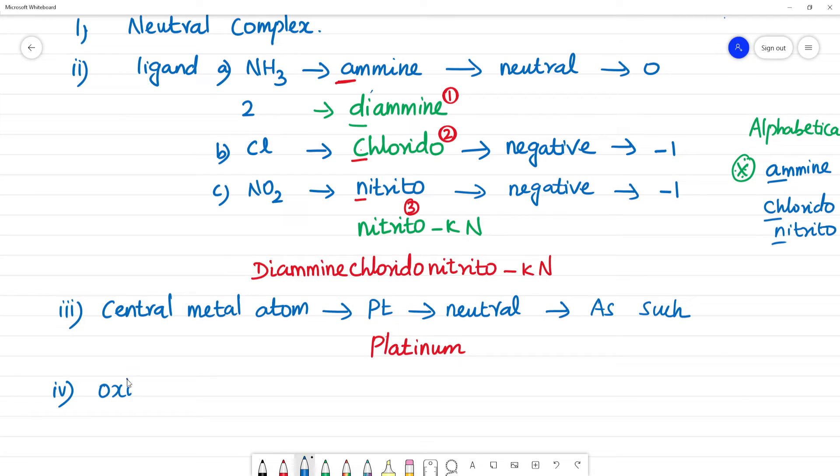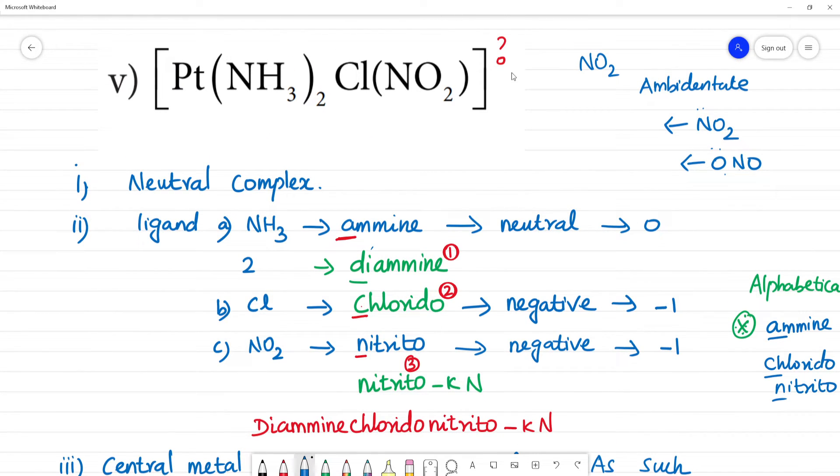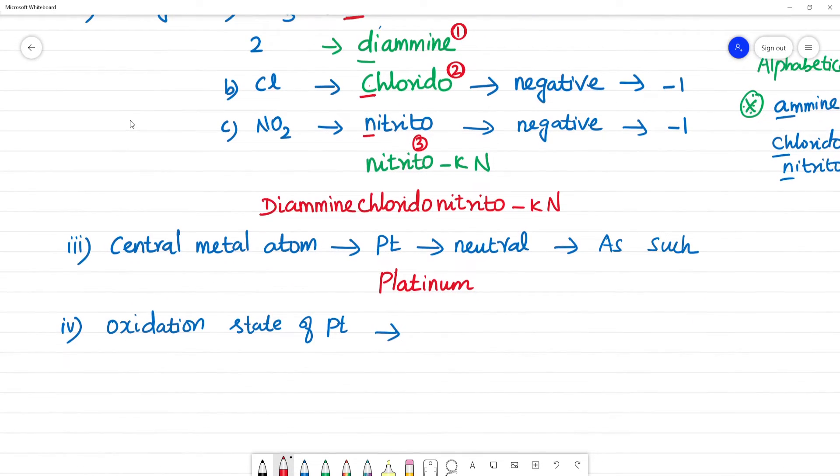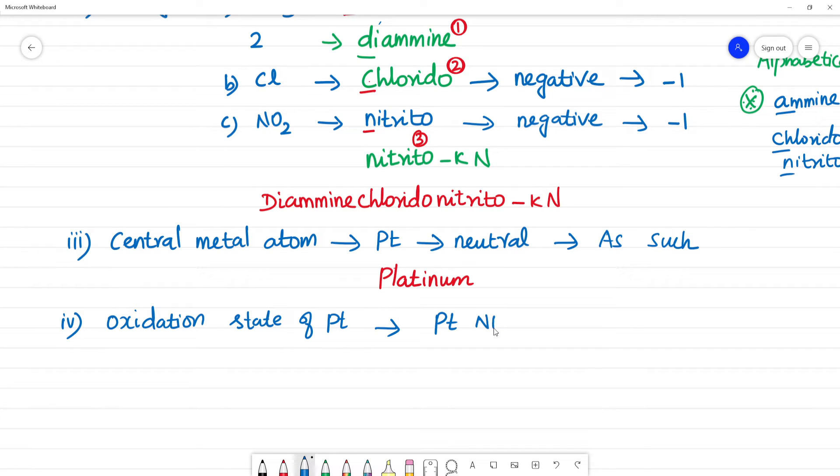Next, oxidation state. Oxidation state of Pt. We calculate the oxidation state. Platinum x, plus NH3 which is neutral so 0, plus Cl which is minus 1, plus NO2 which is minus 1. The whole charge is neutral, so this equals 0. Calculating, x plus 0 minus 1 minus 1 equals 0. So x equals plus 2.